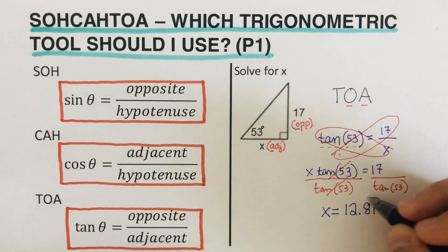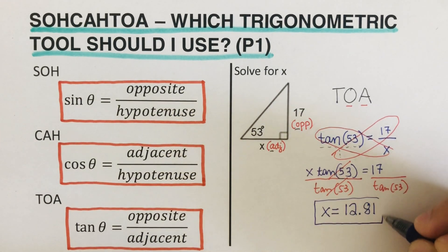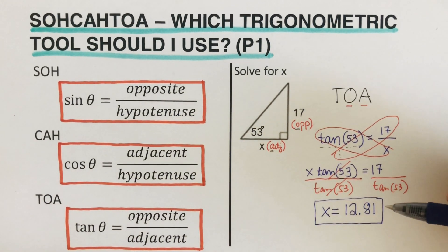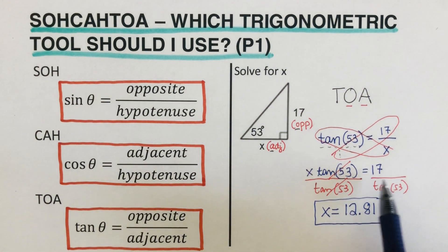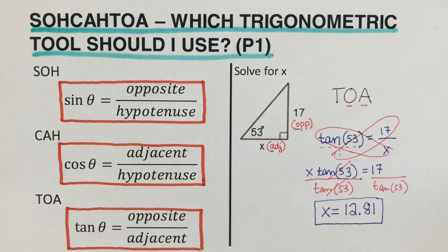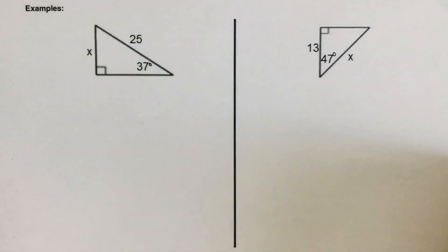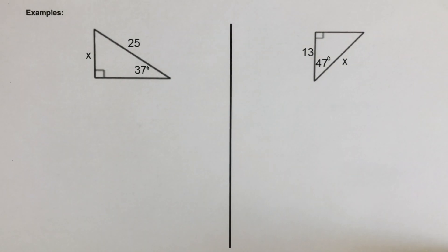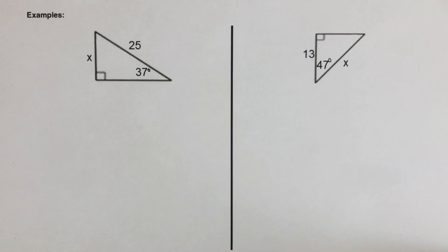Here's a very important thing to remember: make sure your calculator is set up in degrees. If you test it and divide 17 by tangent 53 and it doesn't come out to 12.81, most likely it is in radians, not degrees. Please have your calculator in degree mode. I'd encourage you to pause this video, try this problem on your own, and then unpause to check your answer.